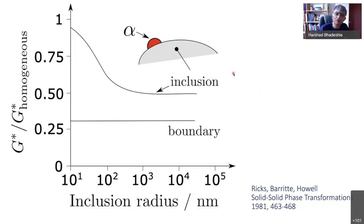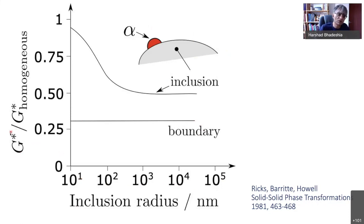Many years ago, Ricks and co-workers did some calculations on the effectiveness of nucleation on an inclusion, which may be a non-metallic inclusion inside the steel. When you compare with austenite grain boundary nucleation, on the horizontal axis we are plotting the inclusion radius. Obviously, you don't want a large inclusion because that will damage fracture toughness. This plots the activation energy for nucleation scaled by the activation energy for homogeneous nucleation without any defect. What they found was that nucleation on inclusions is much more difficult than on an austenite grain surface.